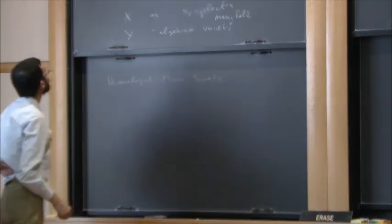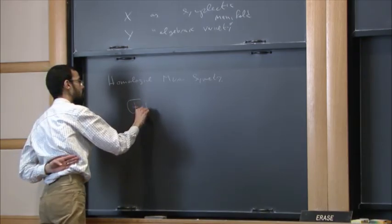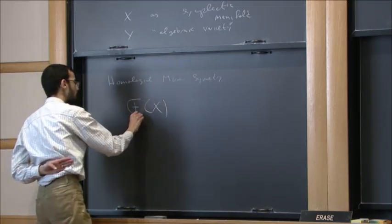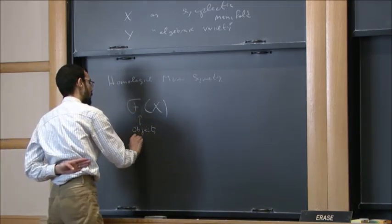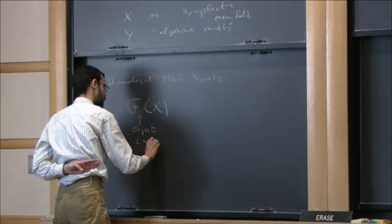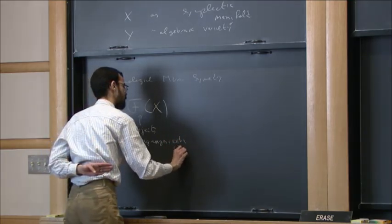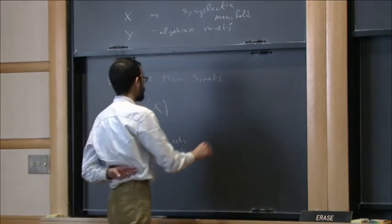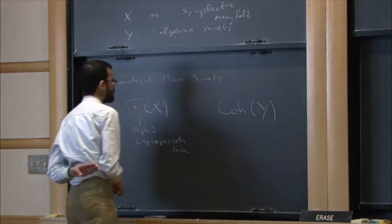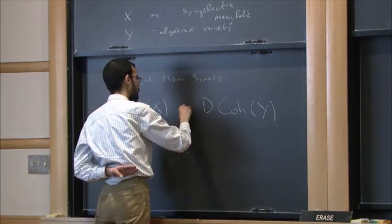So in homological mirror symmetry, the suggestion is that you look at the Fukaya category of X and coherent sheaves on Y, and while these things may not be directly comparable, by passing to some appropriate derived category you get an equivalence.